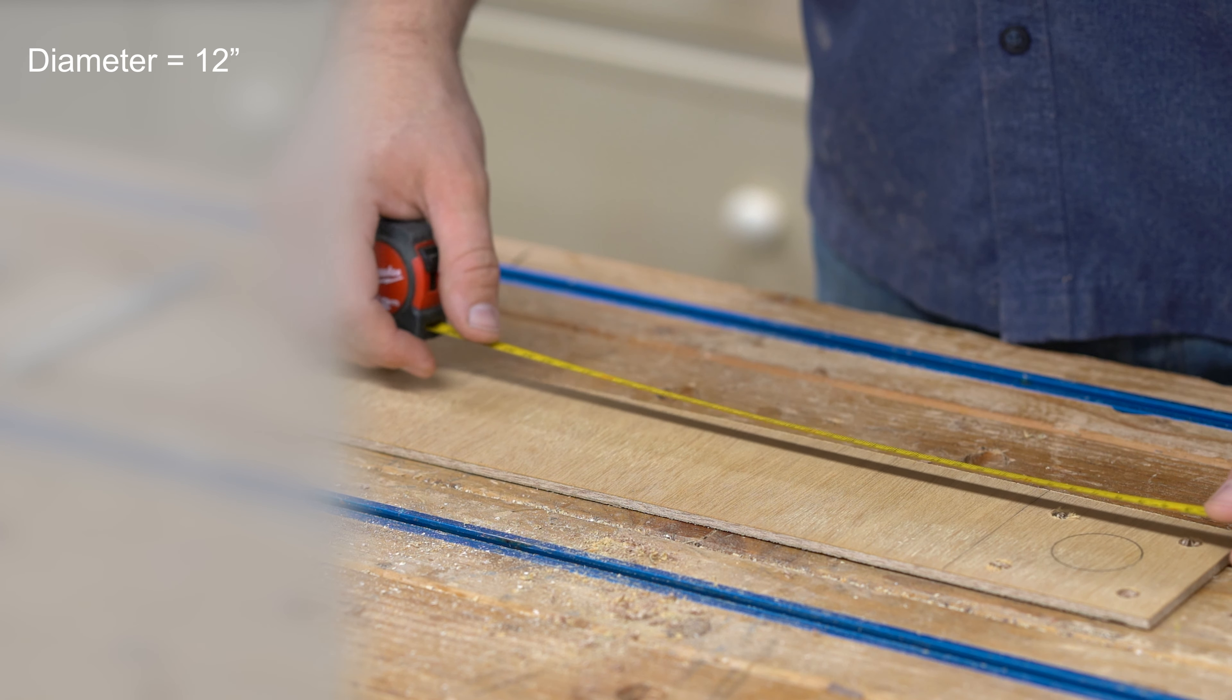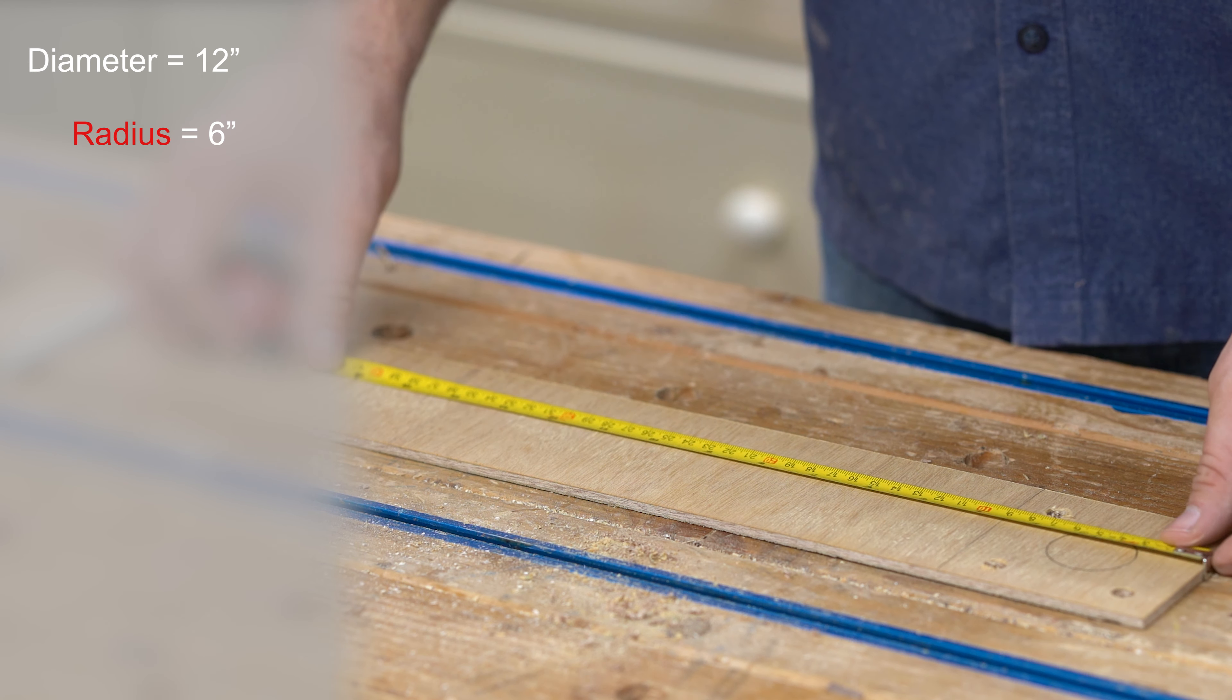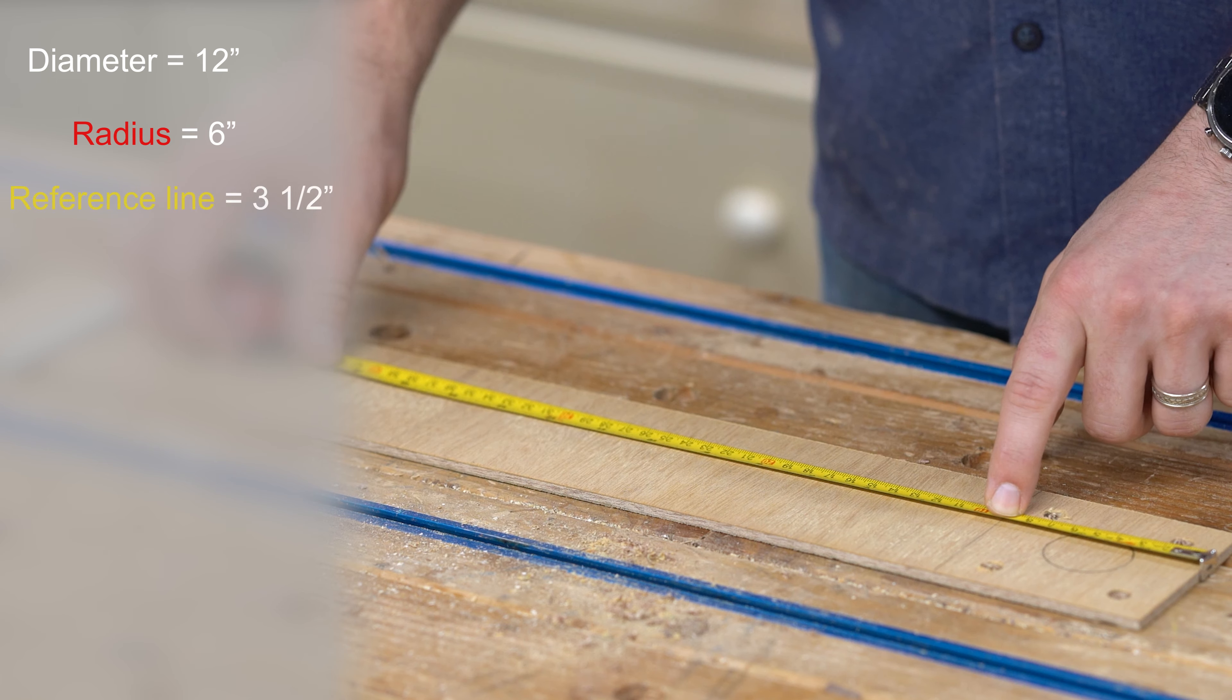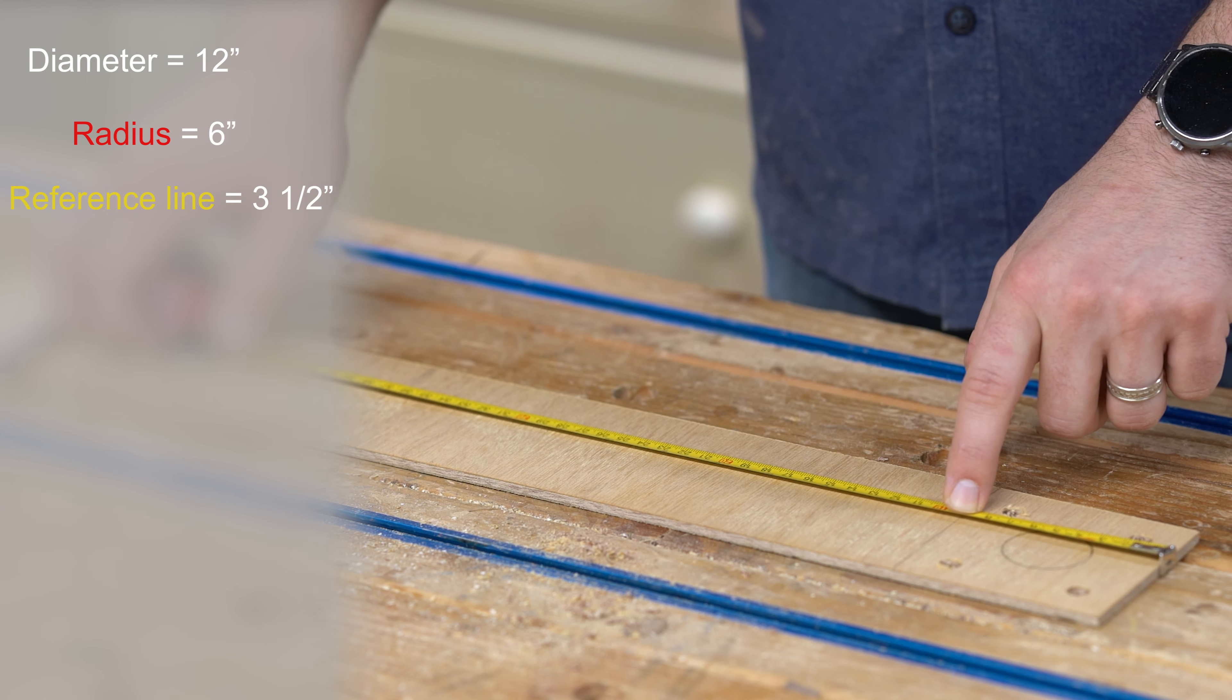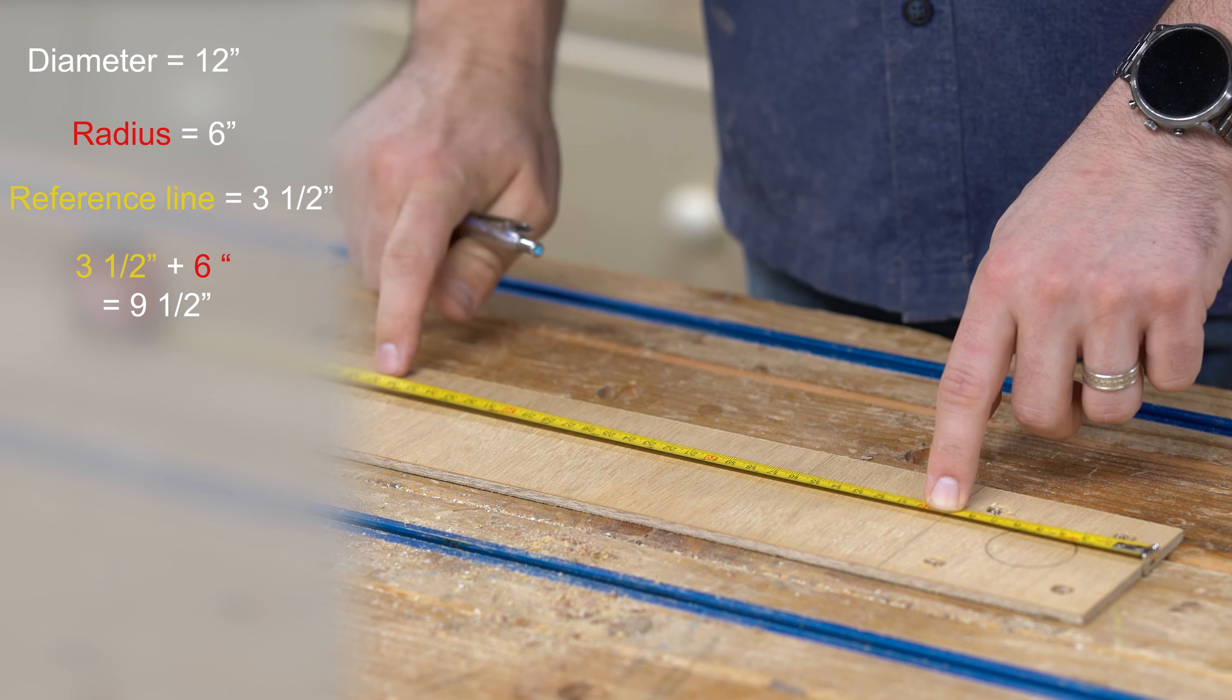Take your ruler or tape measure and measure from the end of the plywood to your reference line. Take that number—three and a half inches in our case—and add the radius of the circle you want to cut. Three and a half plus six is nine and a half.